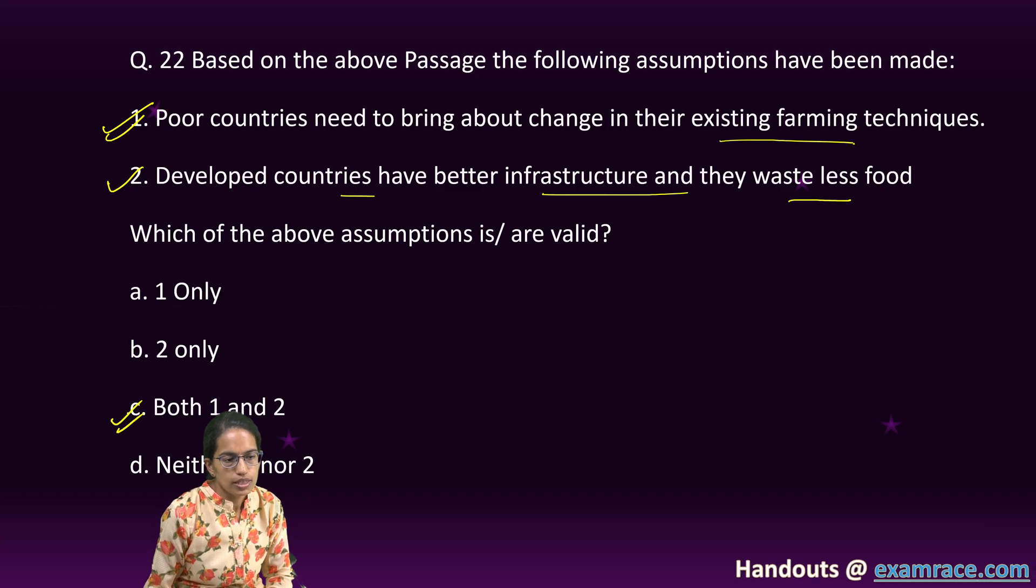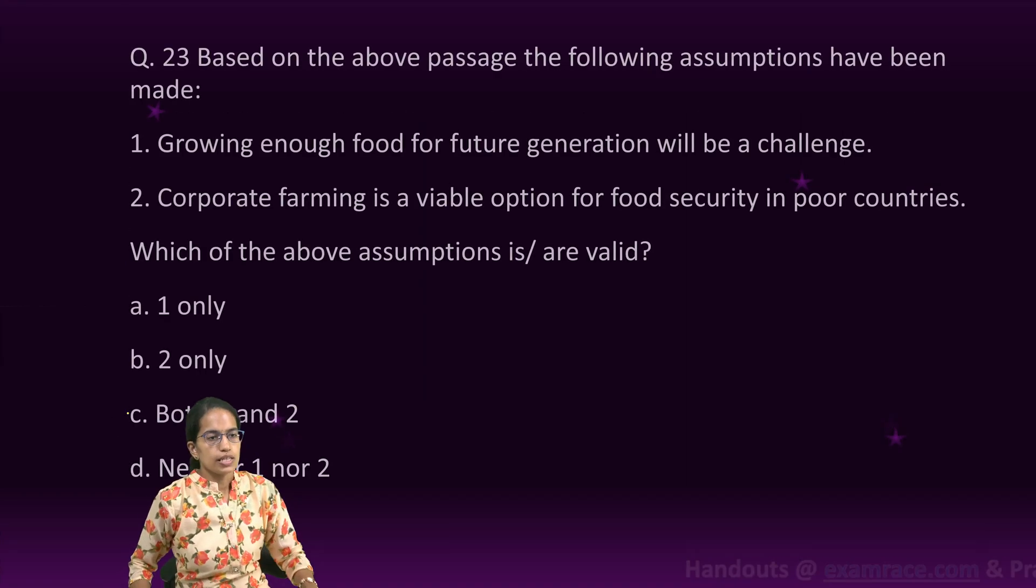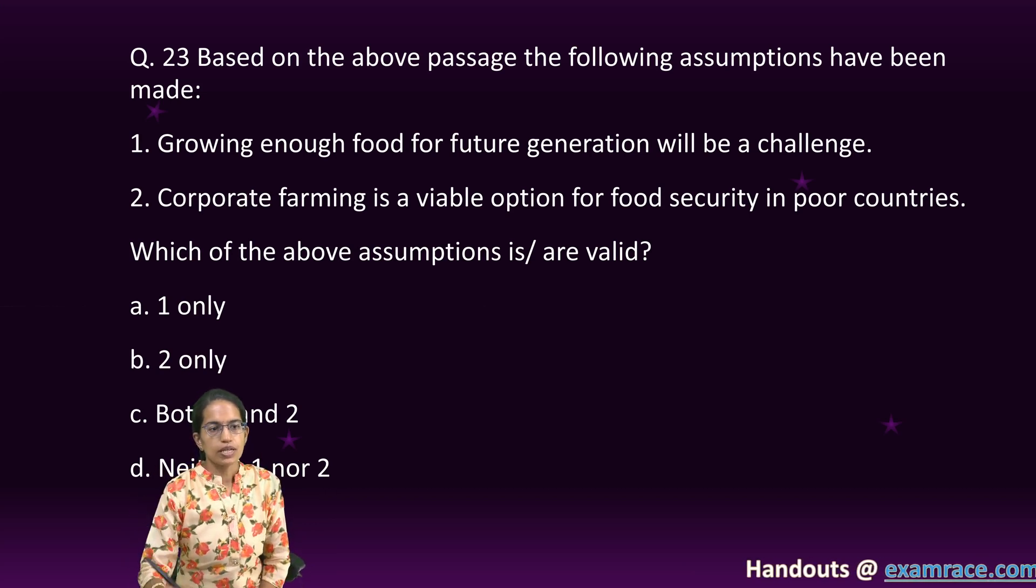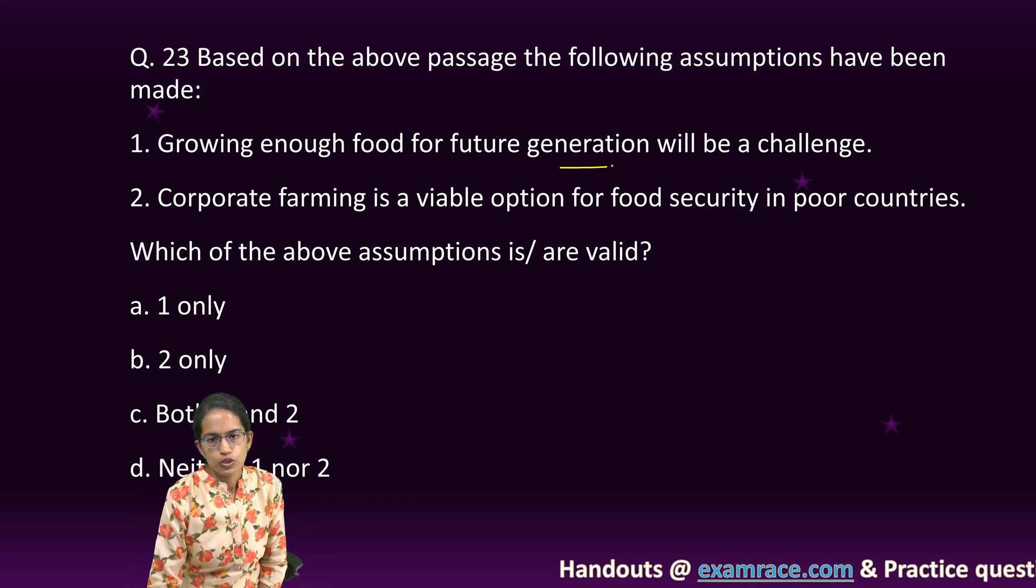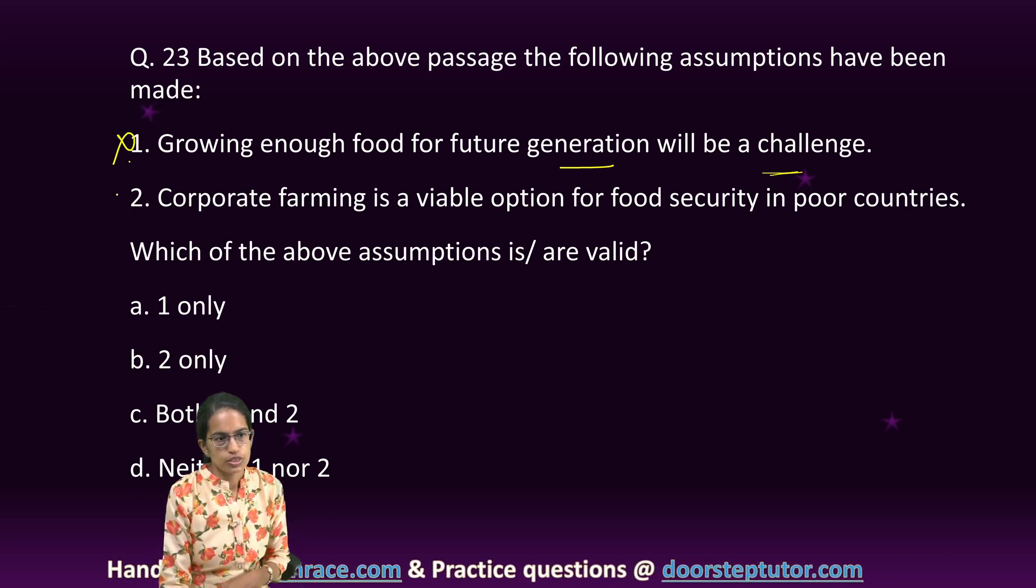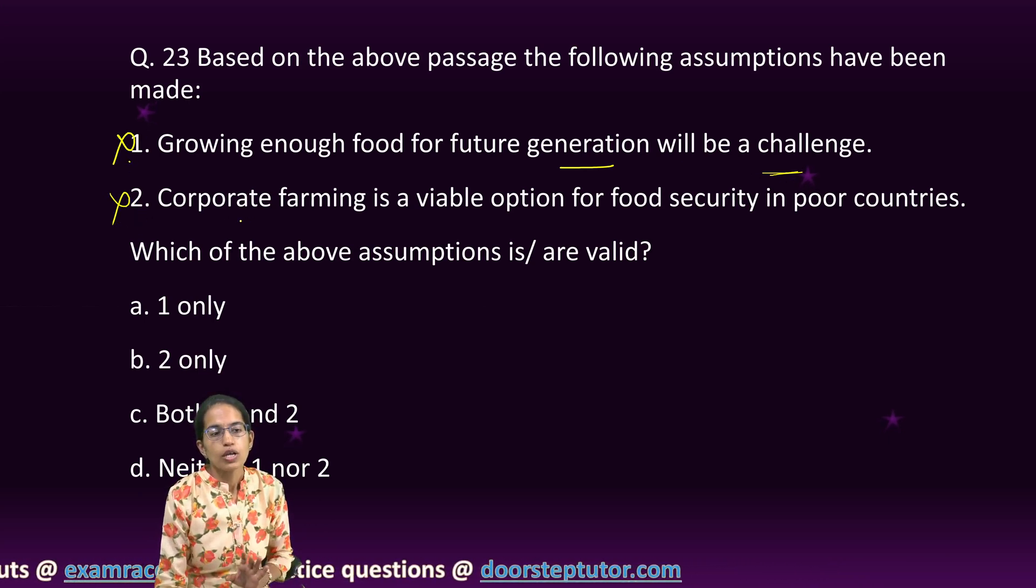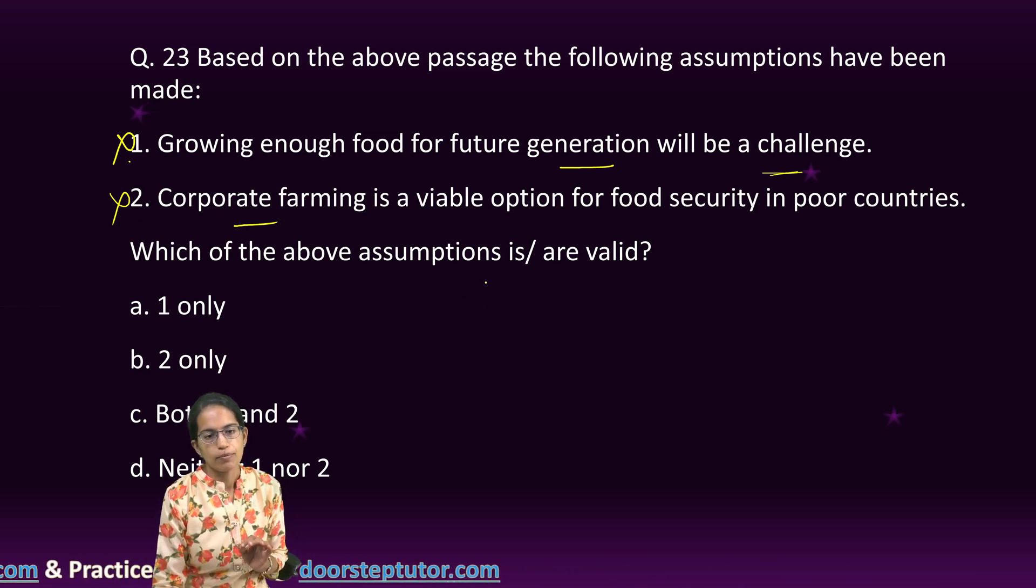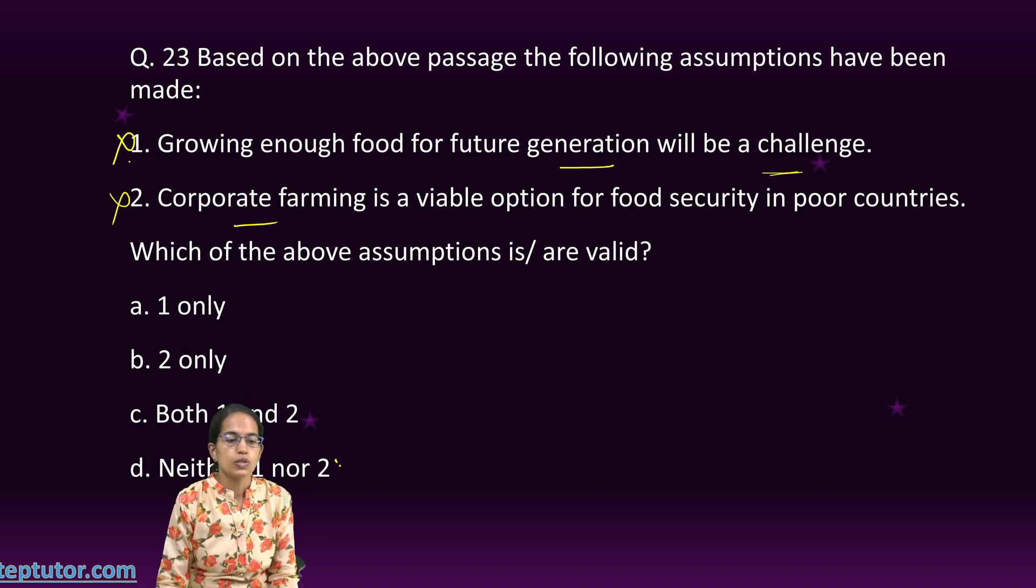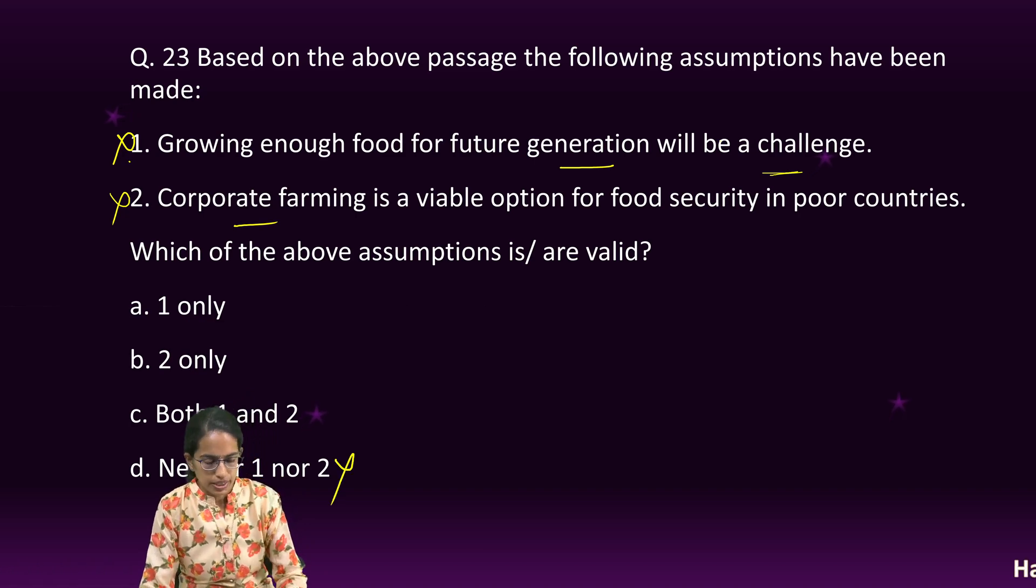The next is based on the above passage, which of the following assumptions have been made? Growing enough food for future generations would be a challenge. No, it's not talking about future generations, nor is it talking about corporate farming and its viability. So, both these assumptions cannot be derived from the passage. Neither of these are correct here.